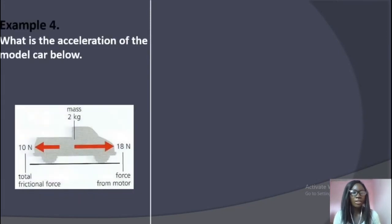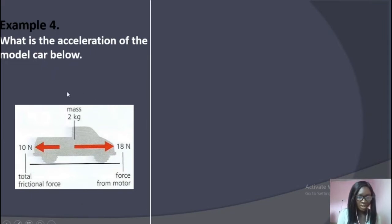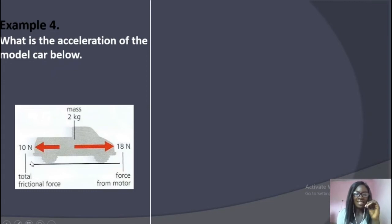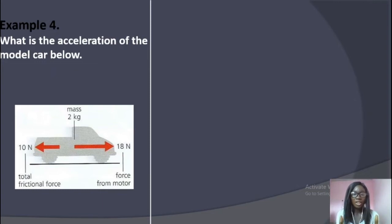We want to find the acceleration of this modern car. The car has a mass of 2 kg and is moving with a force of 18 N. There is a frictional force of 10 N opposing it. Please try to pause this video and solve this problem. If you get the answer, a big thumbs up to you!